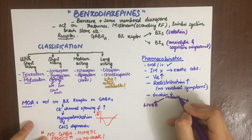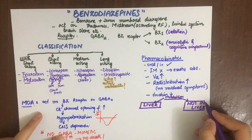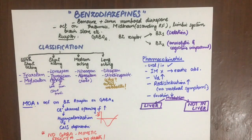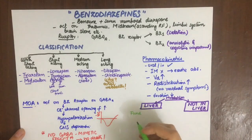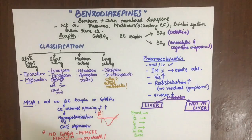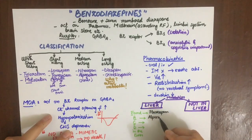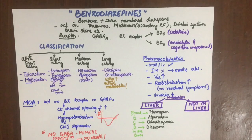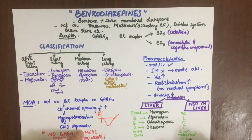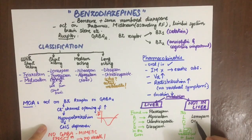For metabolism: some benzodiazepines are metabolized in the liver and some are not. The mnemonic for those metabolized in the liver is 'found a CD in the liver' — F for flurazepam, A for alprazolam, C for chlordiazepoxide, D for diazepam. For those not metabolized in the liver, the mnemonic is 'this LOT is not metabolized in the liver' — L for lorazepam, O for oxazepam, T for temazepam.